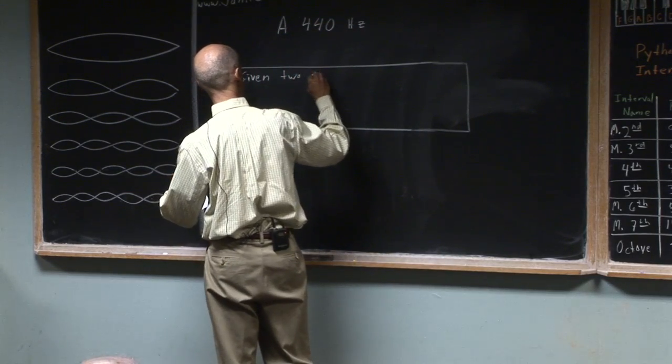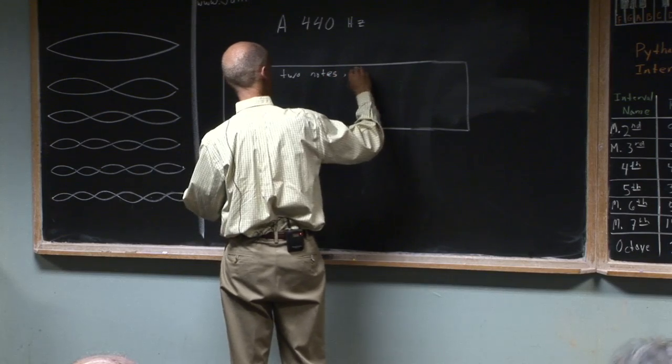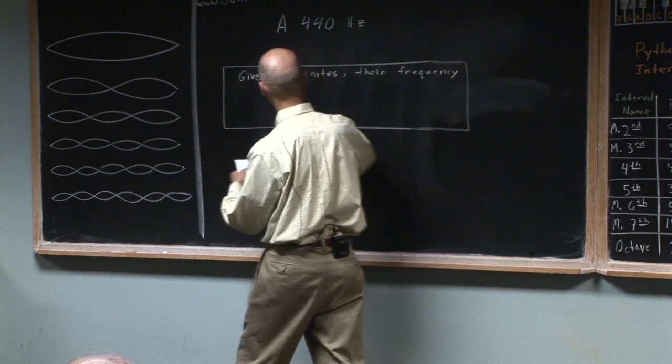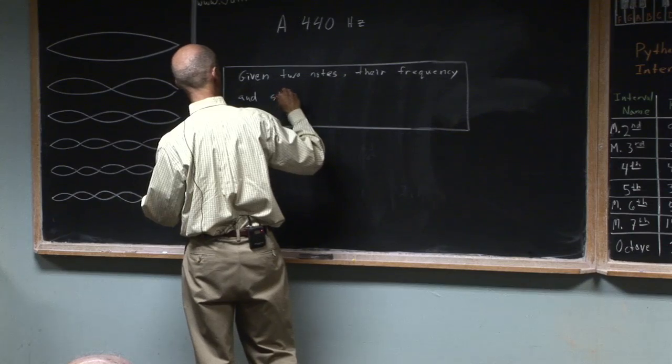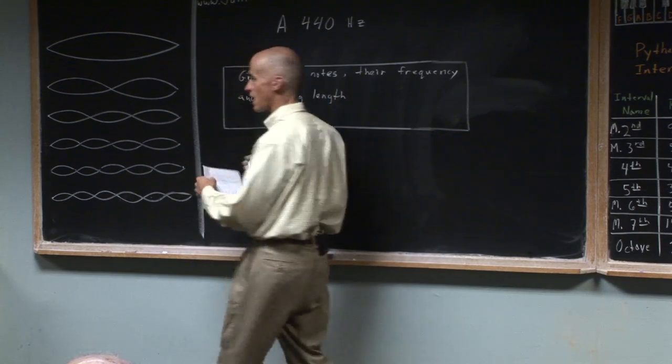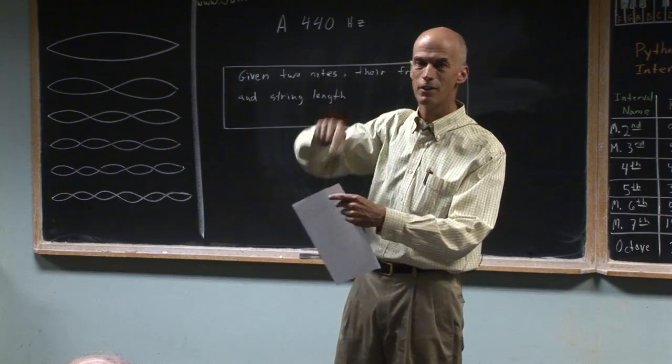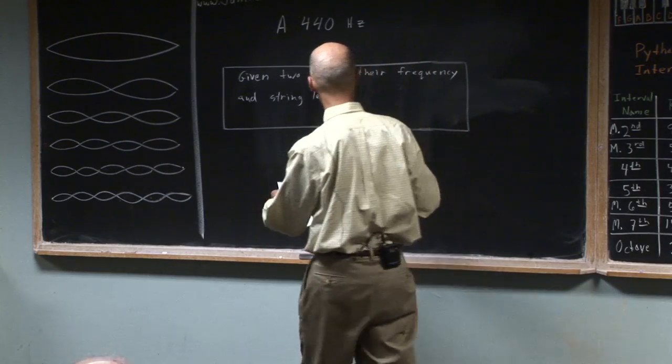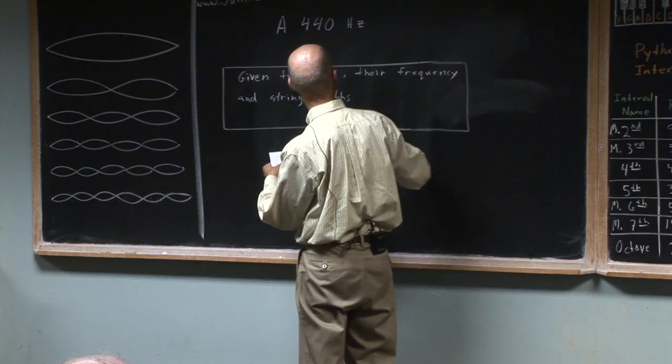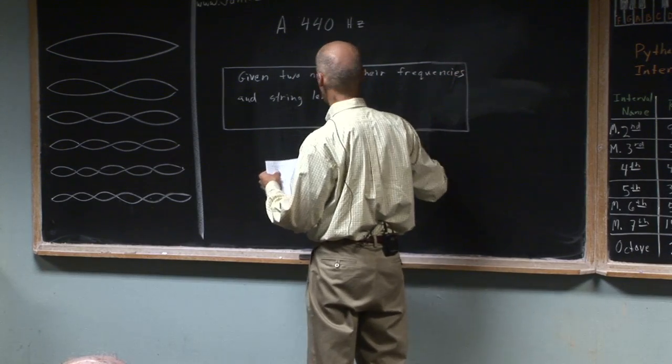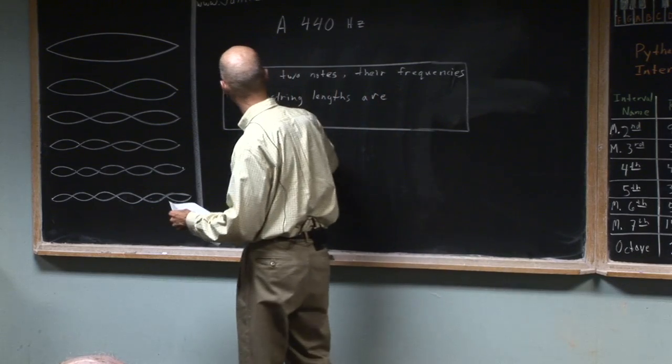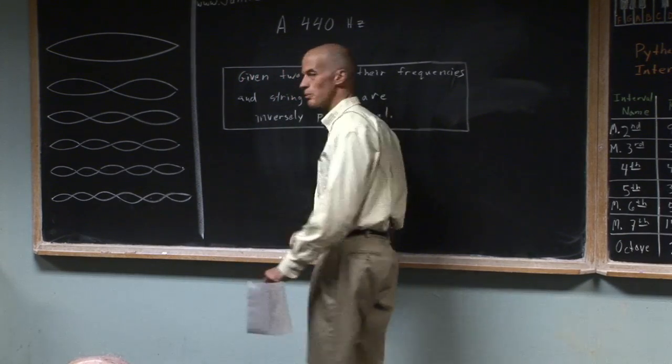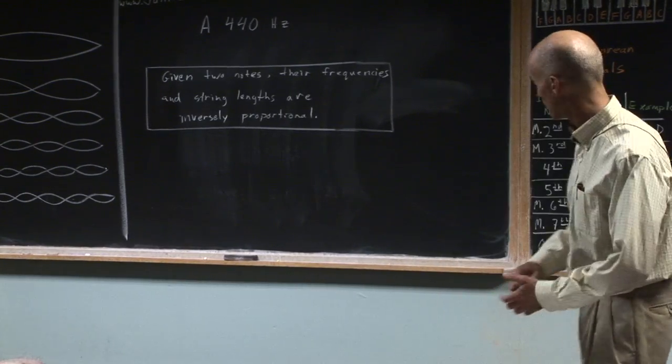Given two notes, their frequency and string length. Now you understand what we were measuring as string length before - it's defined as where you're pushing your finger. It's not the actual length; when you push your finger down, part of the string is now dead. It's the part of the string that's actually vibrating. So their frequencies and string lengths are inversely proportional. This is something we try to build up to in seventh grade.